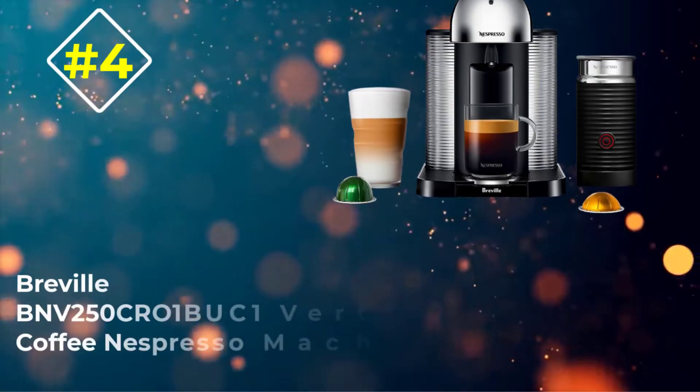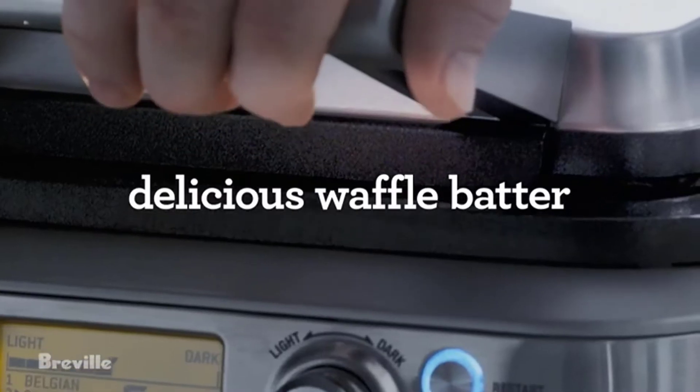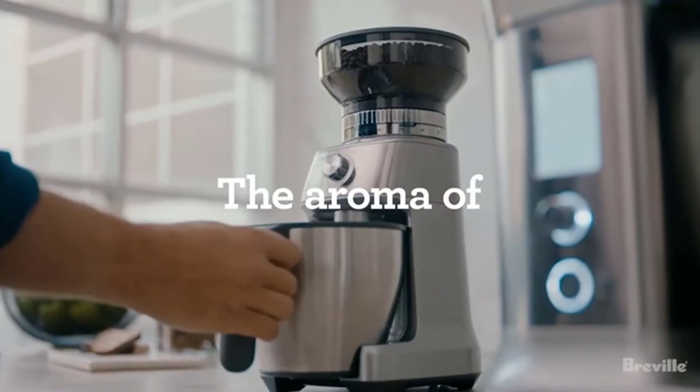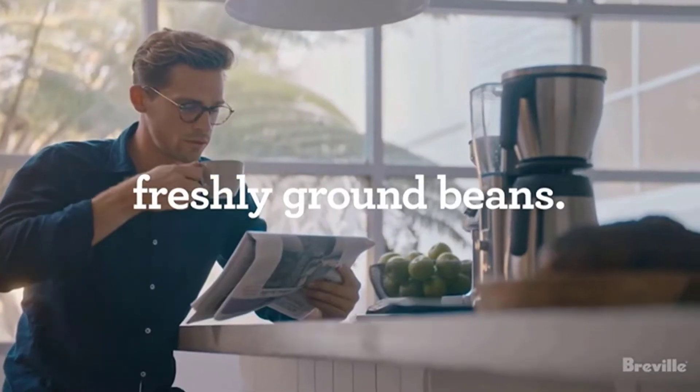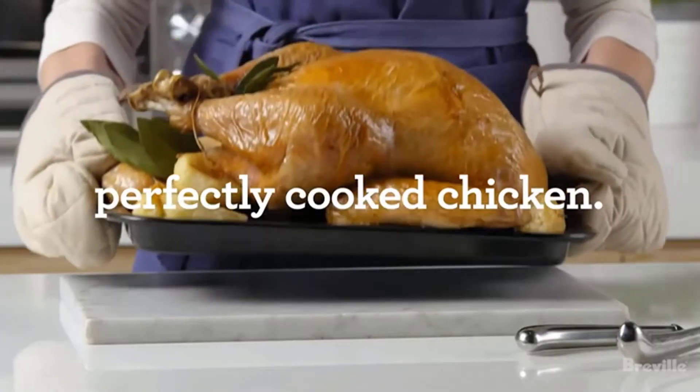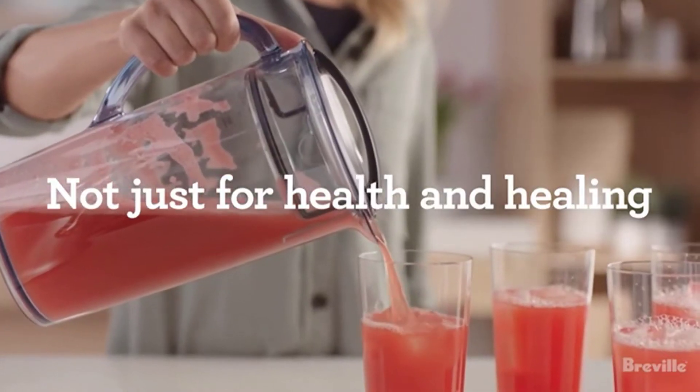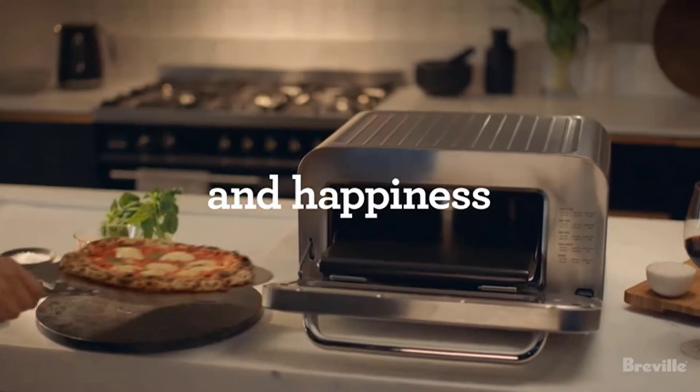Number 4. Breville BNV250CRO1BUC1 Vertuo Coffee and Espresso Machine. Nespresso's Vertuo Coffee and Espresso Machine is similar to the Latissima. However, it uses the newer Vertuo Pods. For this reason, it will provide some more flexibility in your brewing. It's a great choice for someone who wants to enjoy some straight espresso, some more complicated drinks with milk, and some regular coffee.